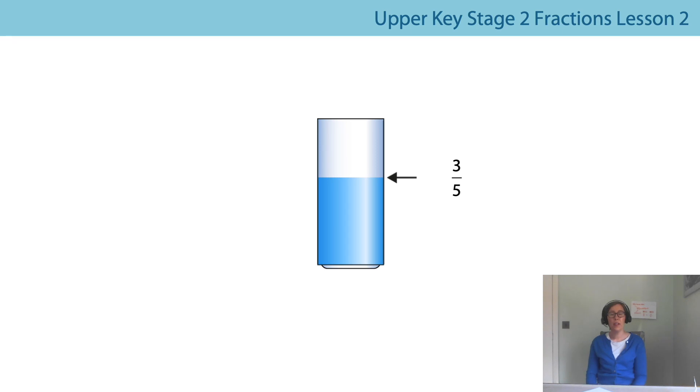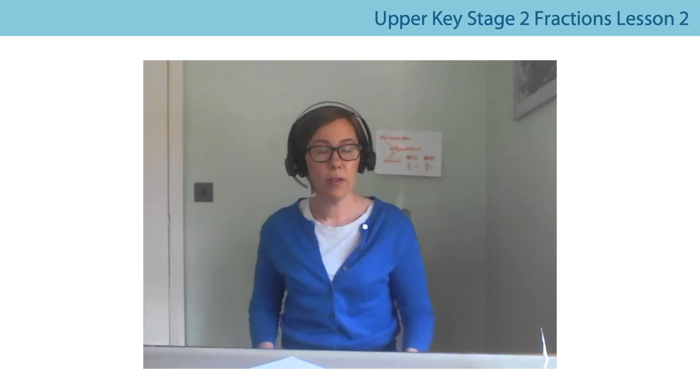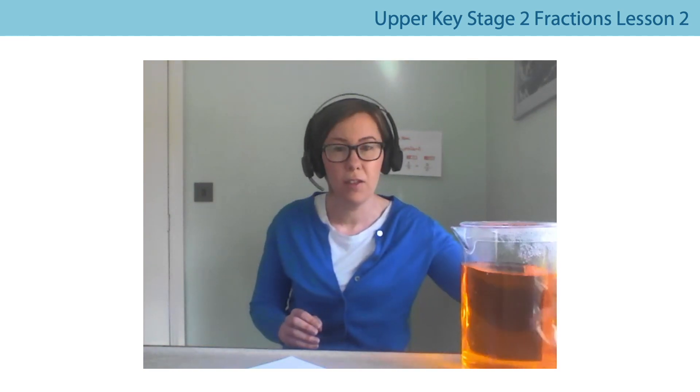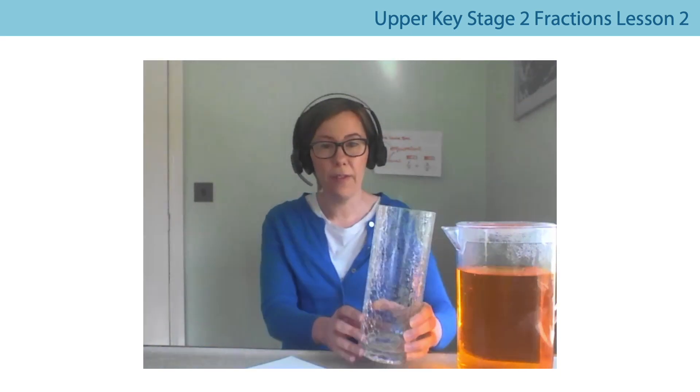Now we are going to do some measuring of our own. So hopefully you have already got your water jug and your straight sided container. But if you haven't, pause the video now and go and grab those things. Did you get it? Brilliant. Well I've also got a jug and in my jug I have orange water just because it makes it easier for you to see on the video, and I've also got a vase that I found in my cupboard.